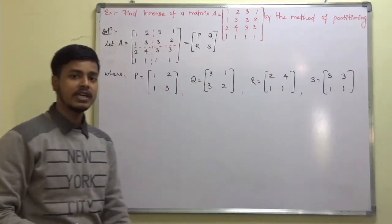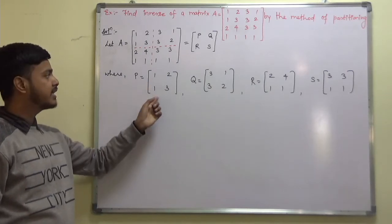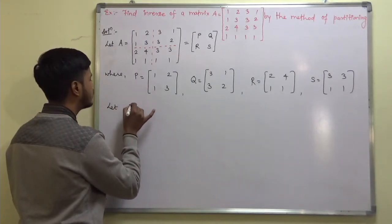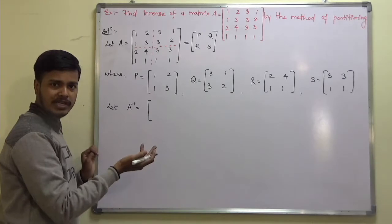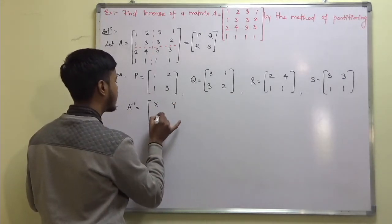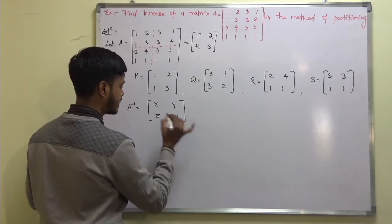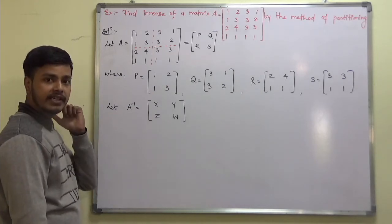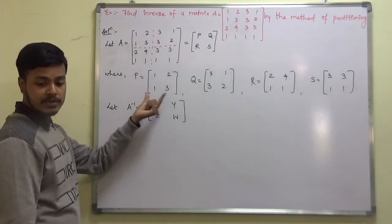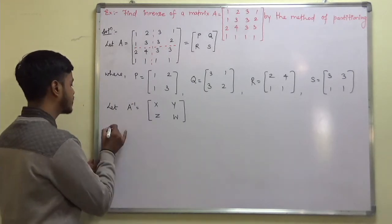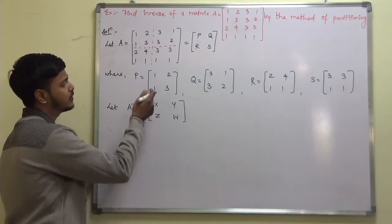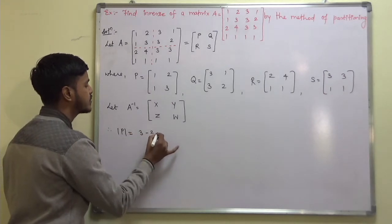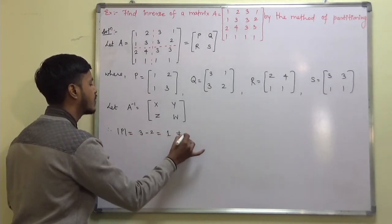As you can see, we have partitioned matrix P in such a way that its determinant is non-zero. Before that, let A inverse be equal to X, Y, Z, W. Now, the determinant of P is equal to 3 minus 2, that is 1, which is not equal to 0.